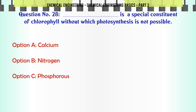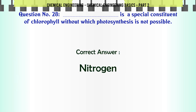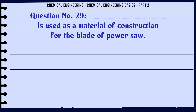Which is a special constituent of chlorophyll without which photosynthesis is not possible? a) calcium, b) nitrogen, c) phosphorus, d) hydrogen. The correct answer is: nitrogen.